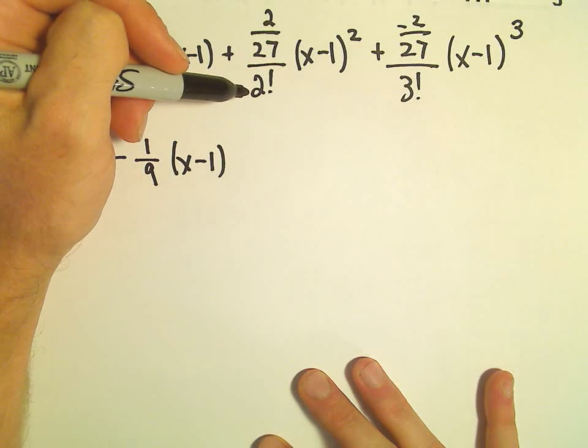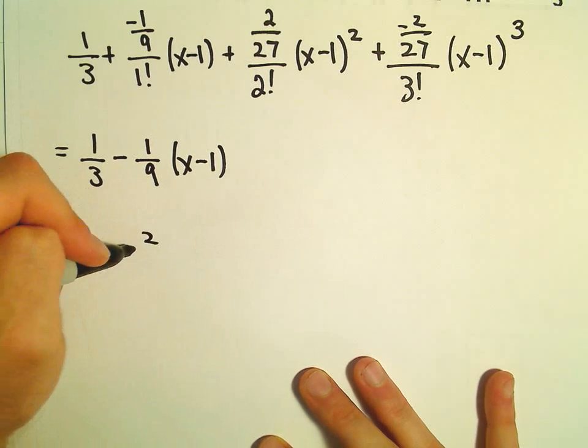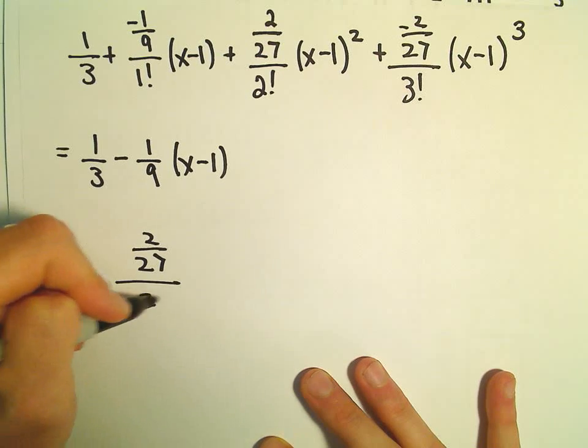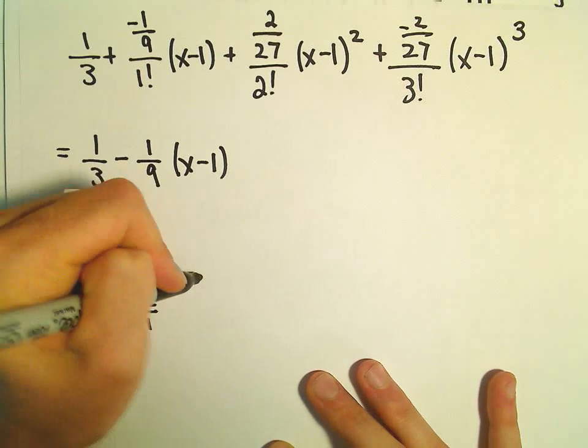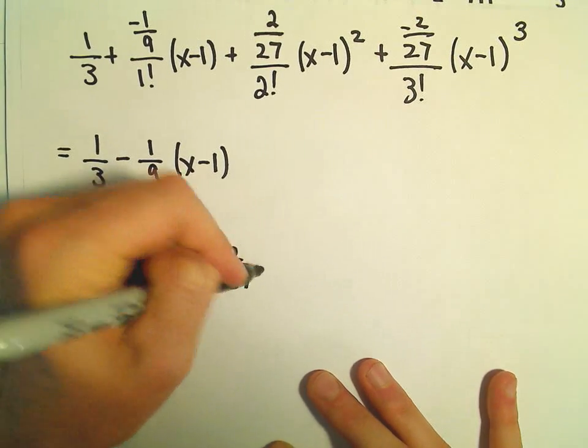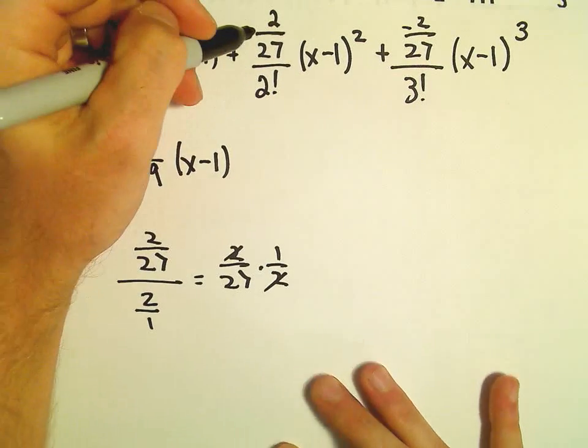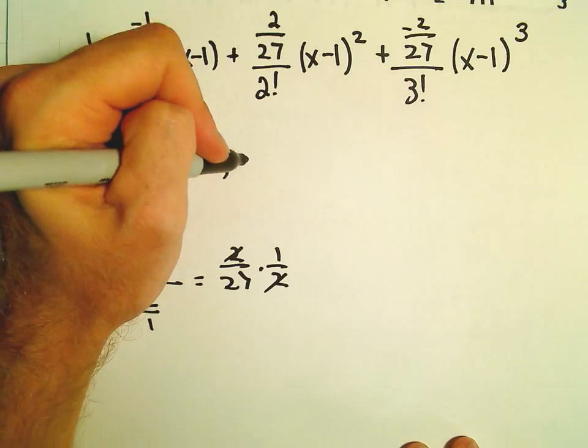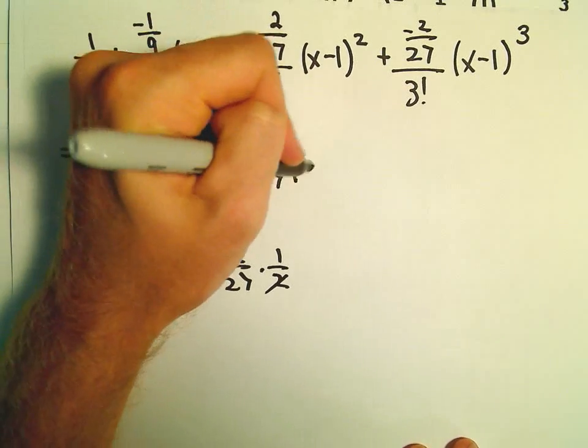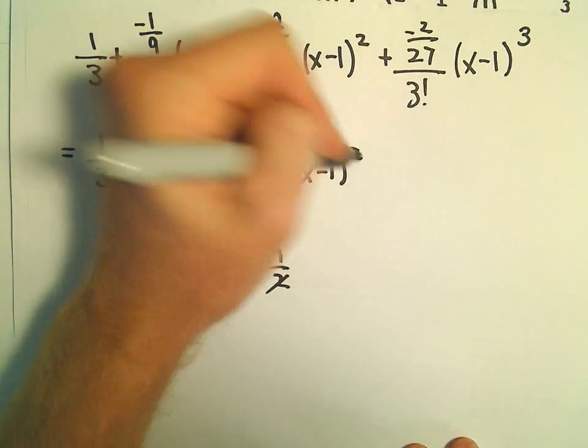Let's see, so 2 over 27 divided by 2 factorial, well that's just going to be 2 over 27 times a half, so those are going to cancel out. So 2 over 27 divided by 2, that's just going to be positive 1 over 27 times x minus 1 squared.